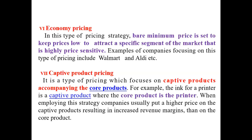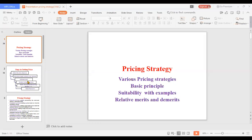Another type is captive product pricing strategy. A captive product means, for example, a printer and its ink — these two items are very much related because the printer always needs ink for operation. The company will usually put a higher price on the captive product and reduce the price of the core product. Here the ink is the captive product and the printer is the core product. They reduce the price of the printer but increase the price of the ink, so that they earn more revenue.